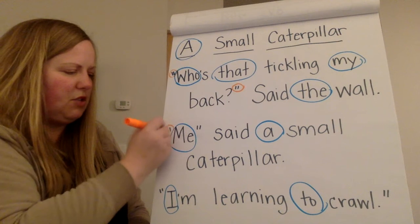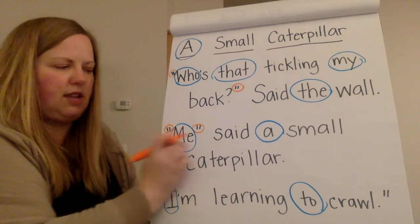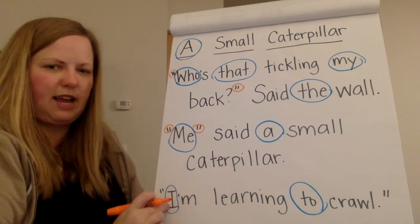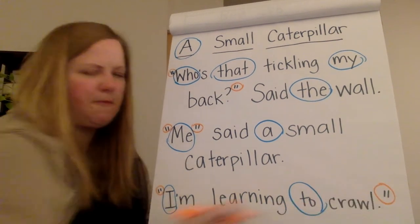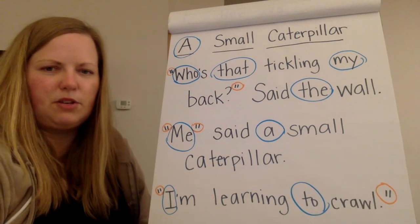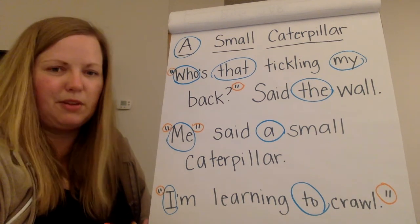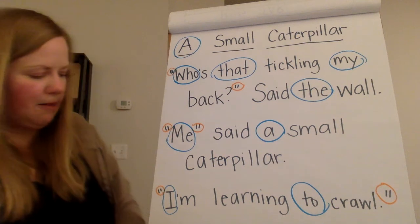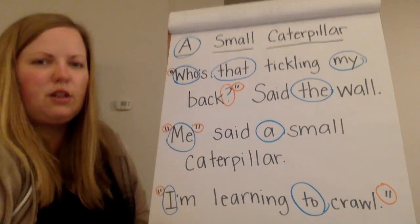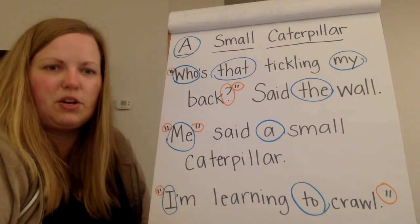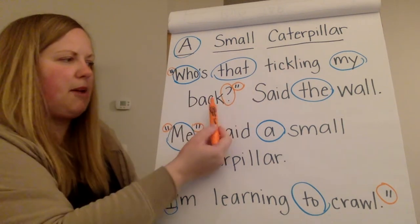And then here we have more quotation marks. Me said a small caterpillar — so the caterpillar is saying that, and then the caterpillar says I'm learning to crawl, so we have more quotation marks. That tells you when you're reading what people or characters are actually saying compared to what they're just thinking. And then there's also a question mark right here. We know question marks are used when you're asking a question, when you want to know something. So the wall wants to know who's that tickling my back.